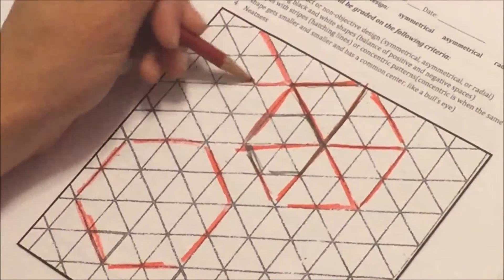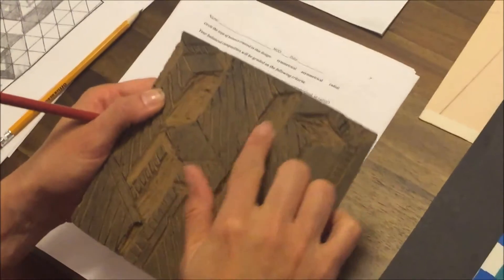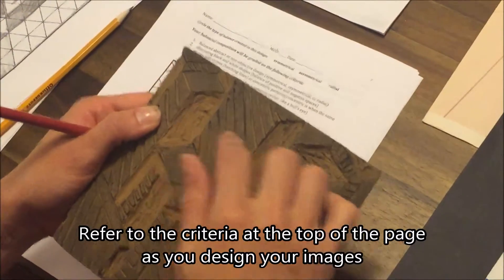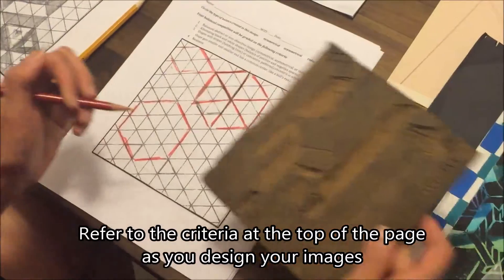Now you will need to keep in mind the criteria for your printing plate. You will need to have a balance of positive spaces that will print, negative spaces that will be carved away, and some kind of texture like stripes, hatching lines, or concentric designs.